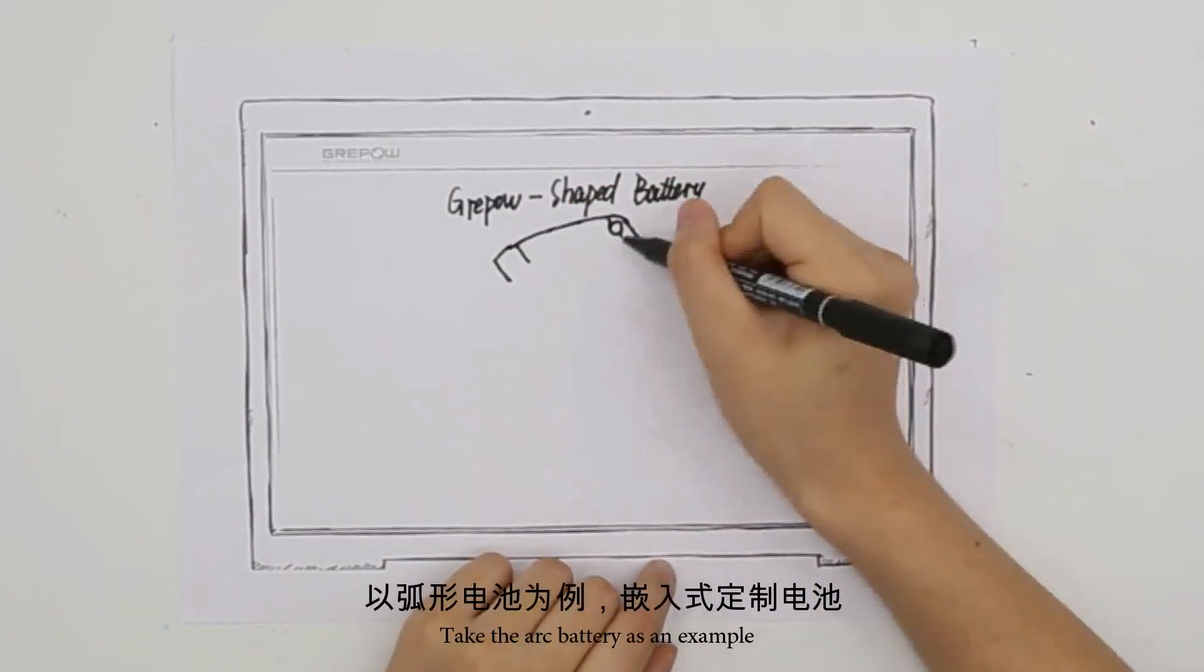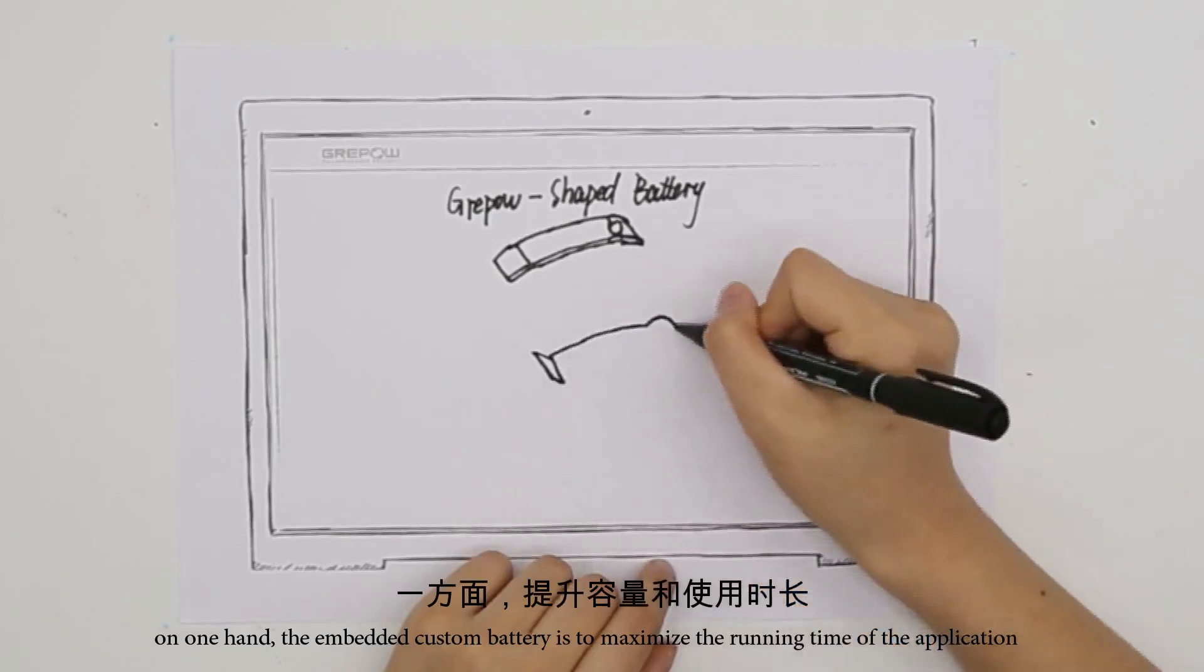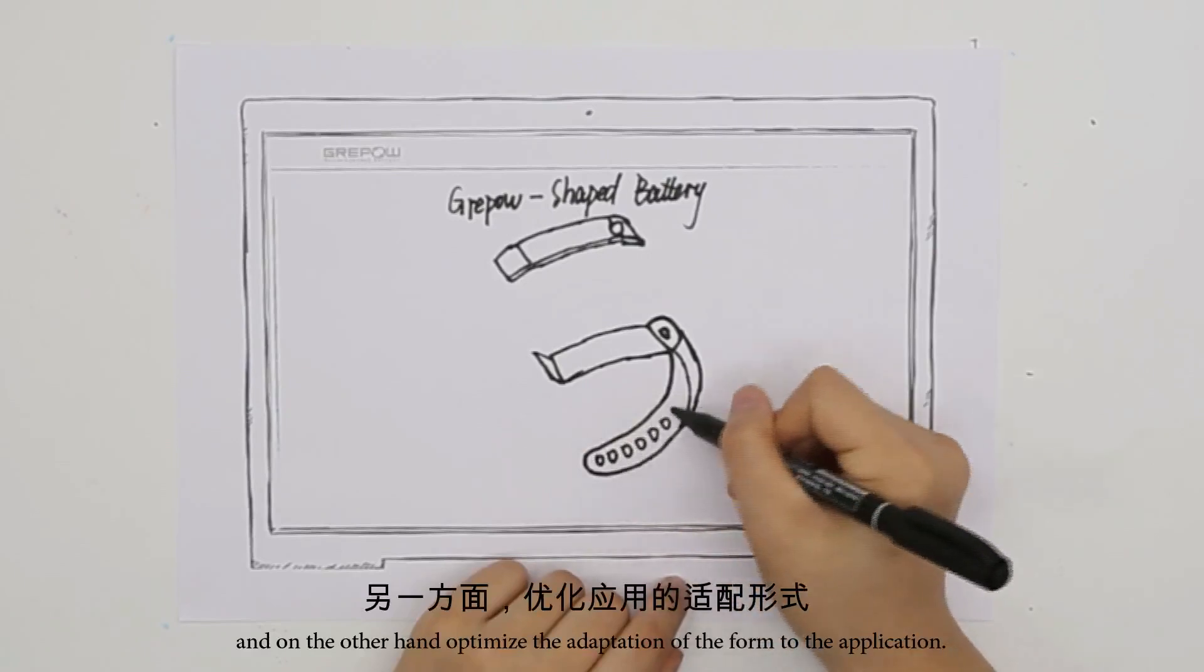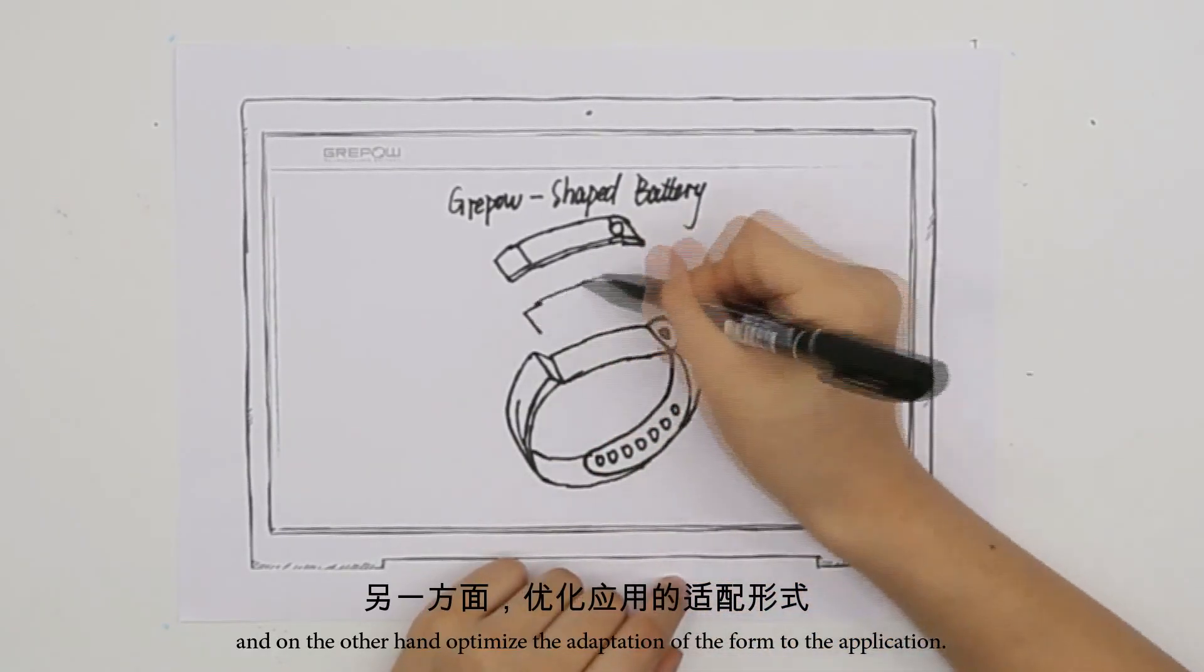Take the R battery as an example. On one hand the embedded custom battery is to maximize the running time of the application, and on the other hand optimize the adaptation of the form to the application.